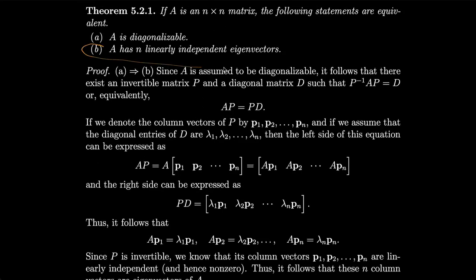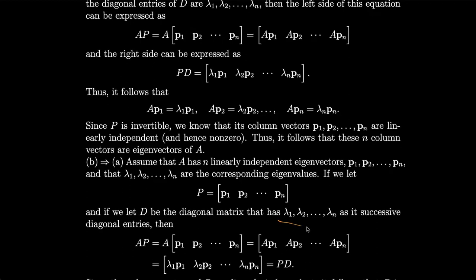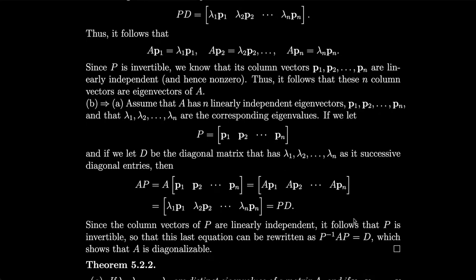Now let's prove the other direction: if A has n linearly independent eigenvectors, then A is diagonalizable. Assume A has n linearly independent eigenvectors P1 through PN with corresponding eigenvalues lambda 1 through lambda N. Let P be the matrix built from those column vectors, and let D be the diagonal matrix with lambda 1 through lambda N as its successive diagonal entries. Then AP equals A times P1 through PN, distributing the A's gives lambda 1 times P1 through lambda N times PN, which equals PD. Since the column vectors of P are linearly independent, P is invertible, and this equation can be written as P inverse AP equals D, proving that A is diagonalizable by definition.